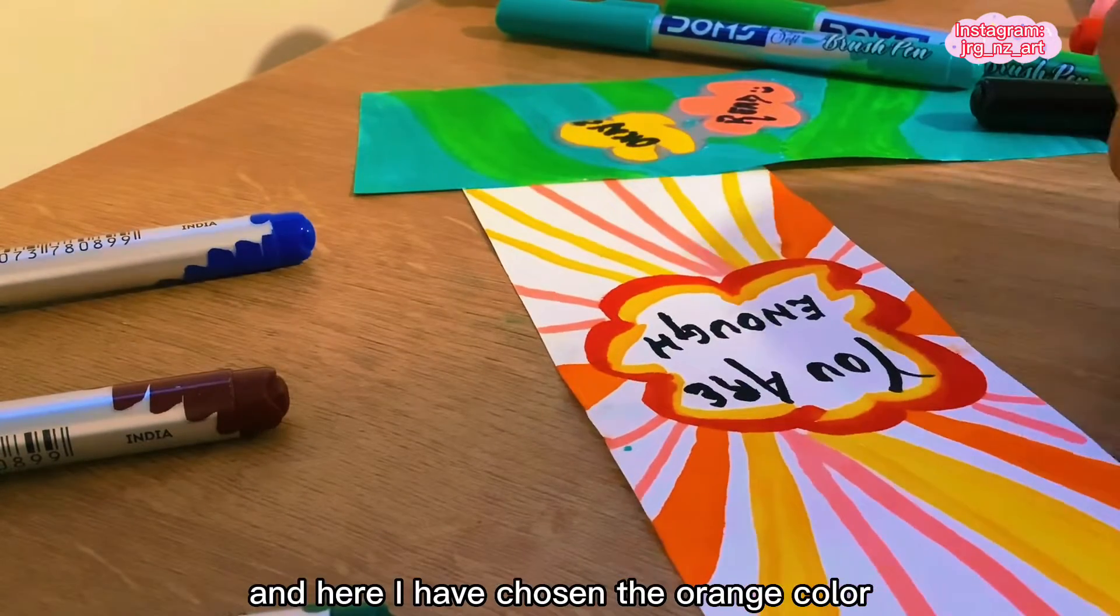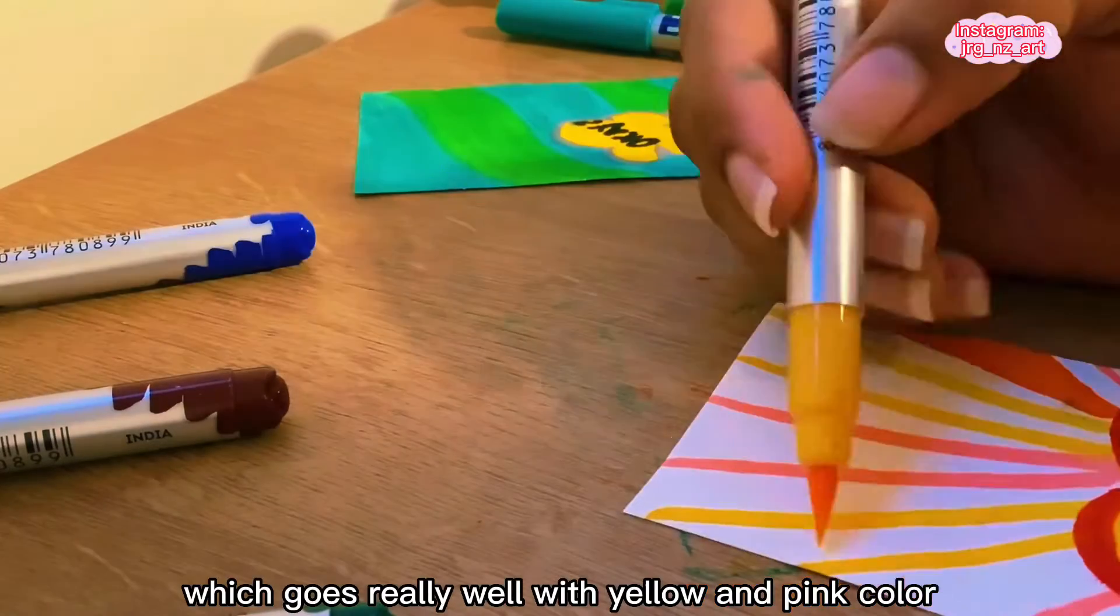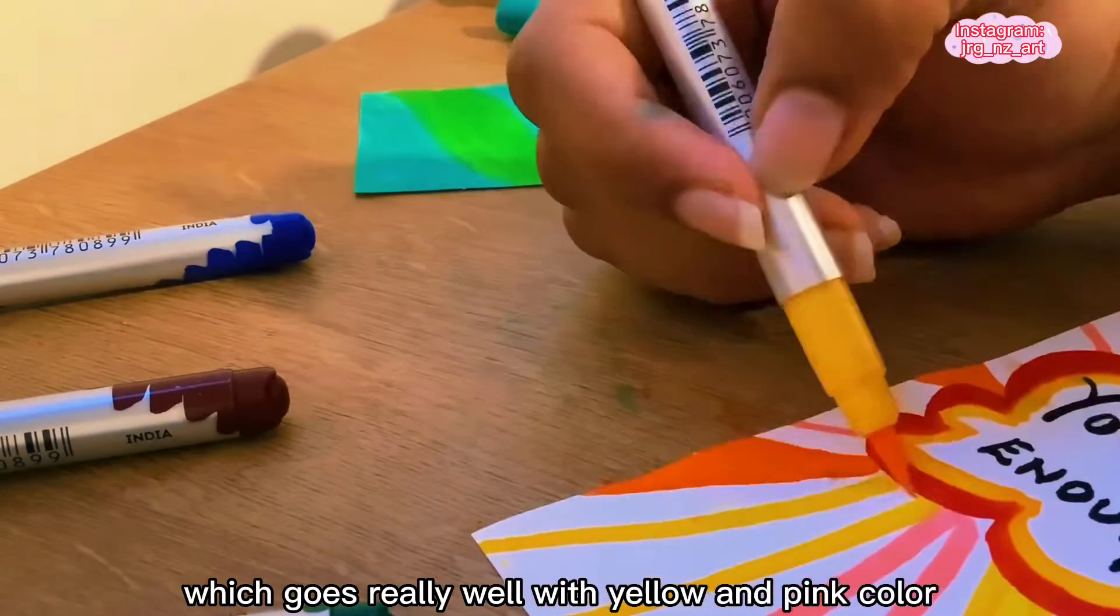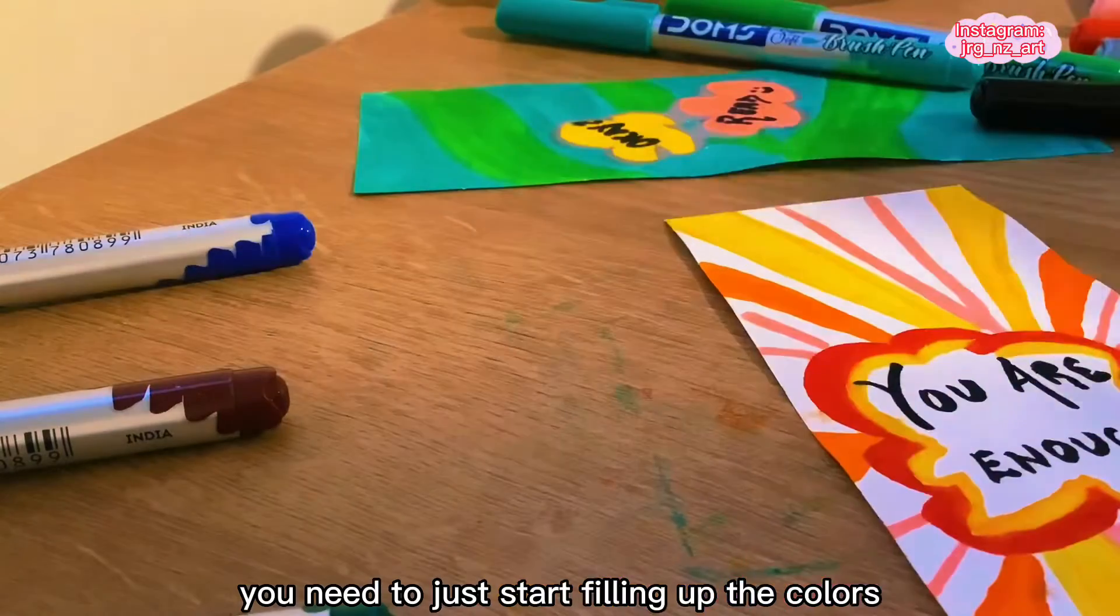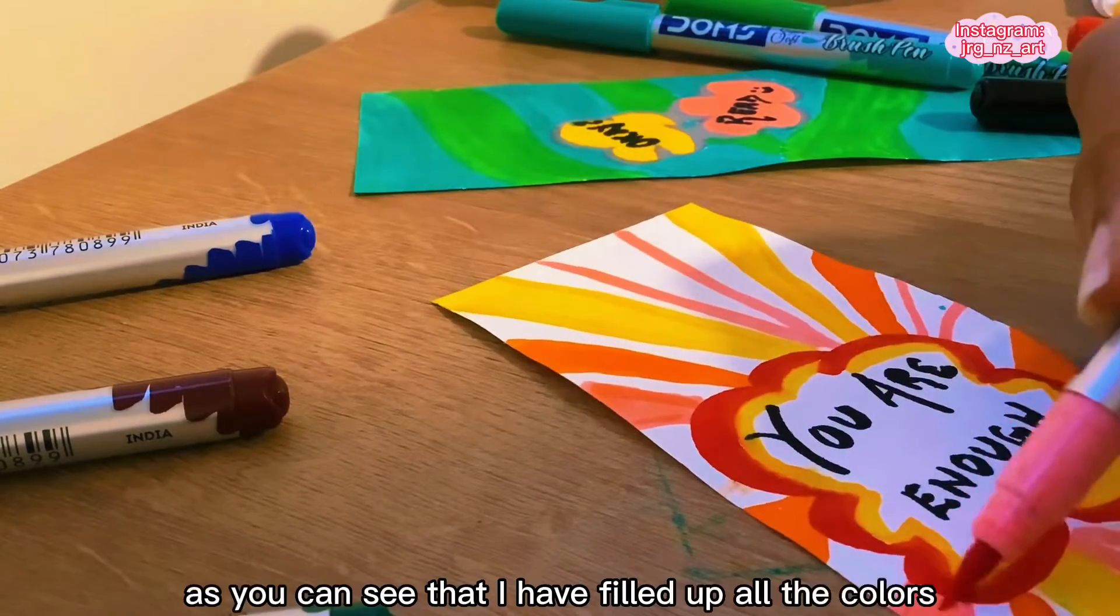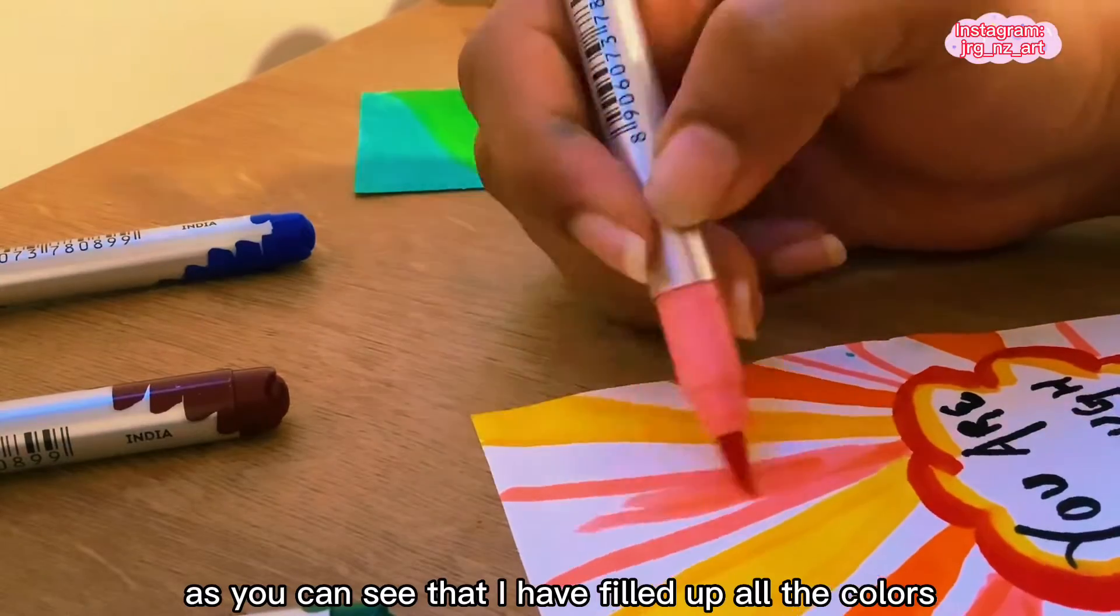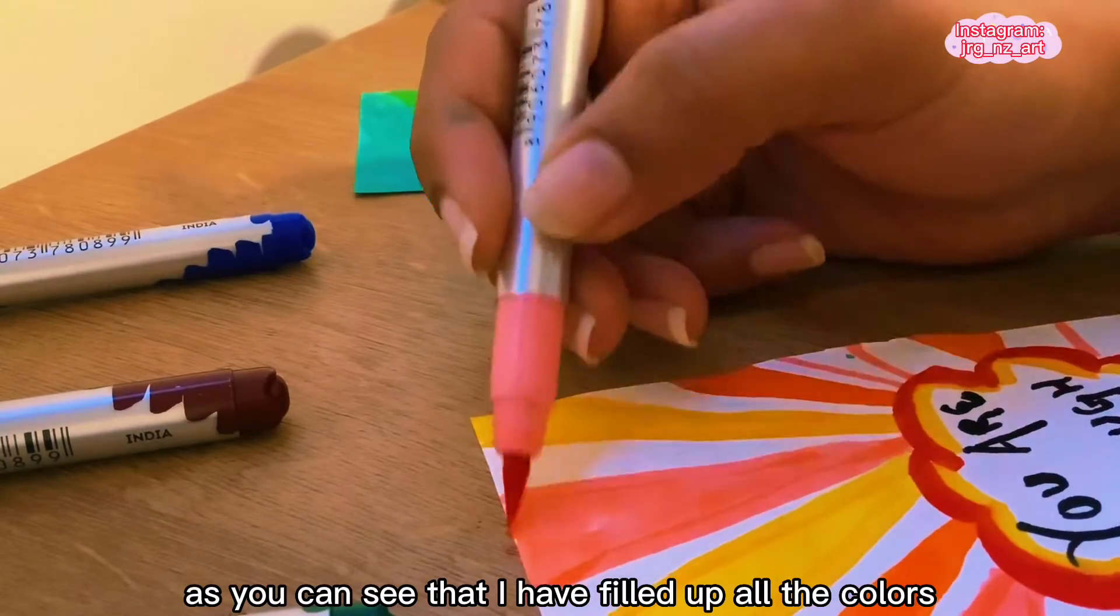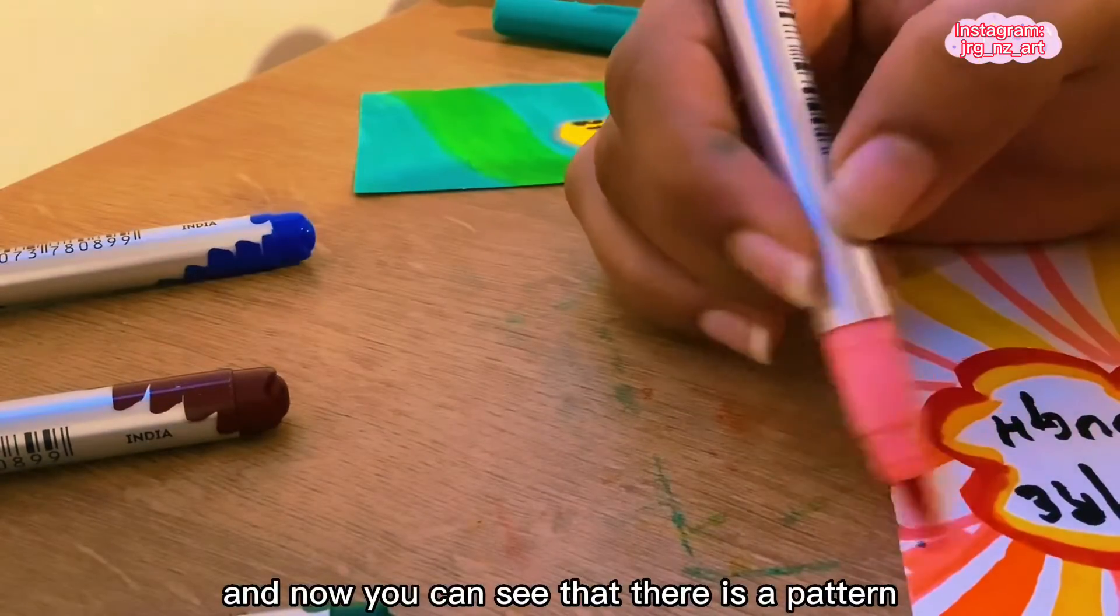Orange goes really well with yellow and pink color. You need to just start filling up the colors of your choice. As you can see, I have filled up all the colors and now you can see that there is a pattern on the sheet.